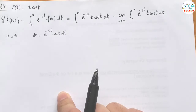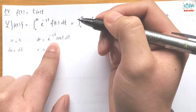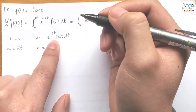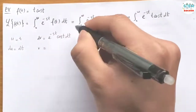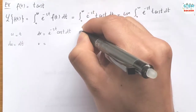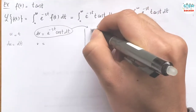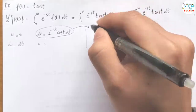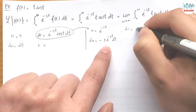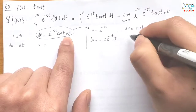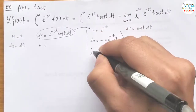So du equals dt. Now we need to take the integral of dv, which requires integration by parts again — it's a bit tedious. Let u equal e^(-st), then du equals -s·e^(-st) dt. And let dv equal cos(t) dt, then v equals sin(t).